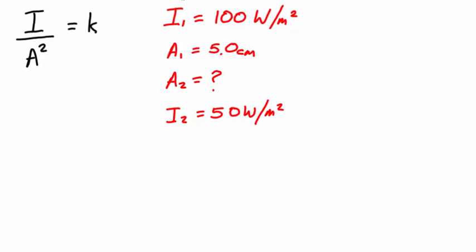The first thing to do here is to calculate our constant. So 100 divided by 5 squared equals 4. So the constant k is 4.